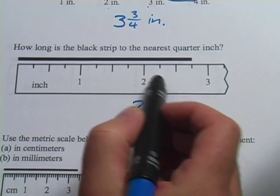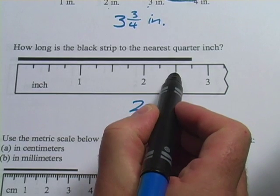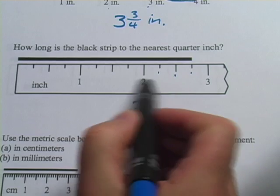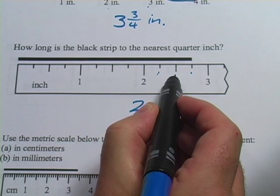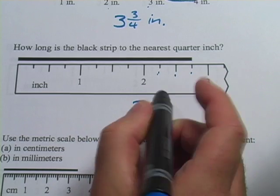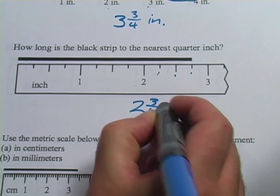And it looks like here's the half. These must be the quarters. And that's all the further it's divided into. So this is one quarter. Two quarters is the same as one half. Three quarters. So this is two and three quarters inch.